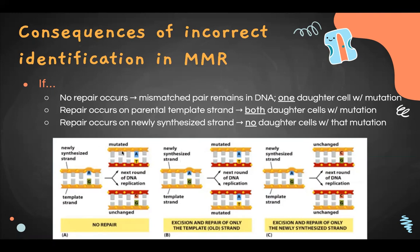If repair occurs on the parental template strand — which we don't want — both daughter cells end up with the mutation. What we want is repair on the newly synthesized strand: the 'A' on the new strand is replaced with 'C' via MMR so that in the next round of replication, G pairs with C as it should, and neither daughter cell has a mutation.